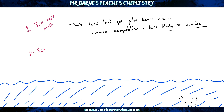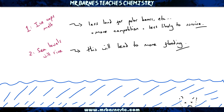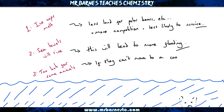The second effect is that if the ice caps melt, sea levels are going to rise, and if they rise it's going to lead to more flooding. Also, with this increase in average temperature, some areas in the world are going to become too hot for some animals. If they can't move to a cooler climate, they might become extinct.